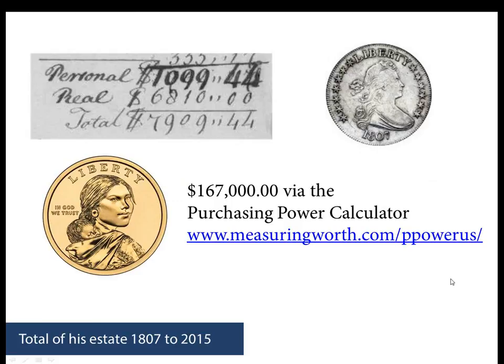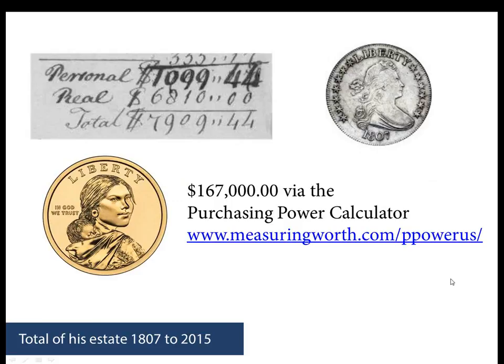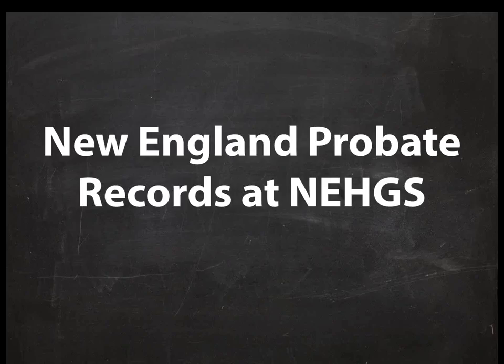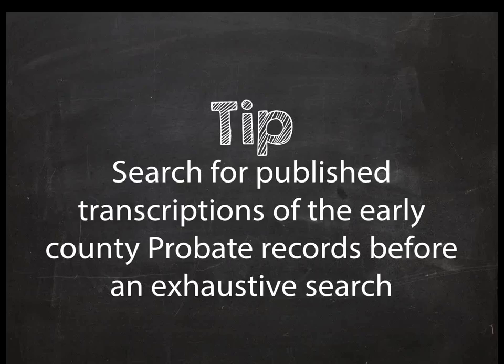Now I'd like to take you on a virtual tour of NEHGS and what holdings we have both online and at our library. Let's go state by state. First, a tip: search for published transcriptions of early county probate records before doing an exhaustive search. The handwriting is often difficult, there's no point recreating the wheel, and it saves you time to know if a probate exists. At NEHGS we have microfiche and microfilm readers on the fourth floor microtext and technology floor, with tens of thousands of rolls of microfilm available.